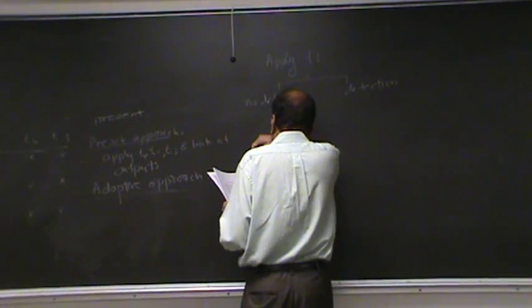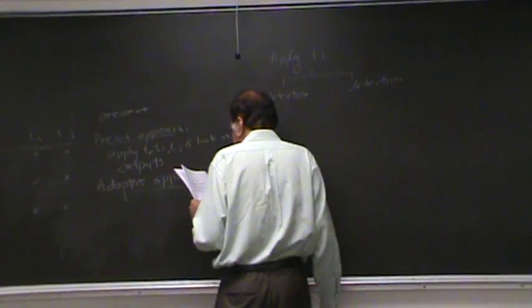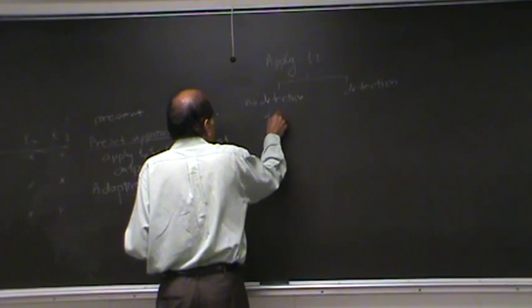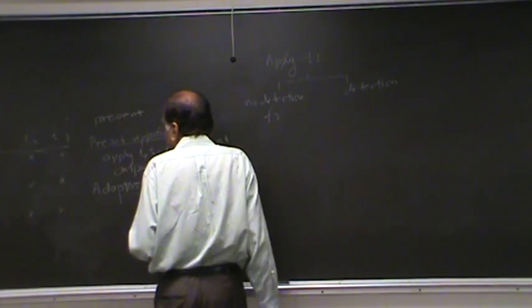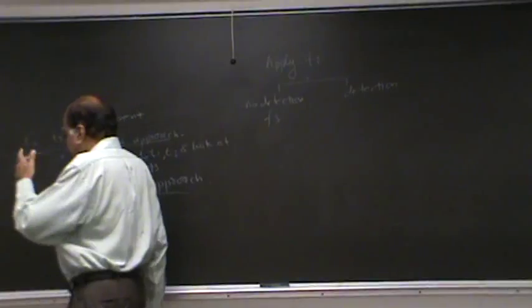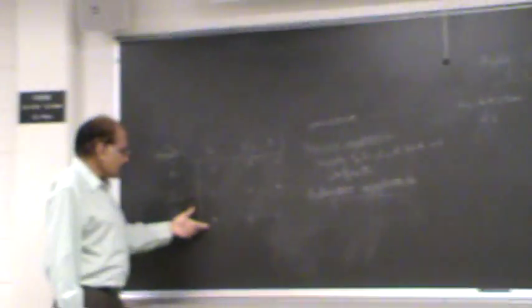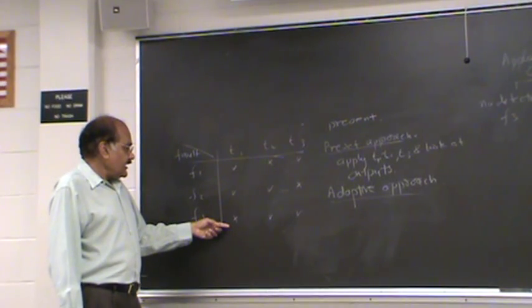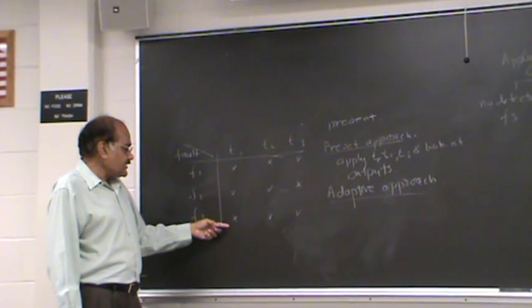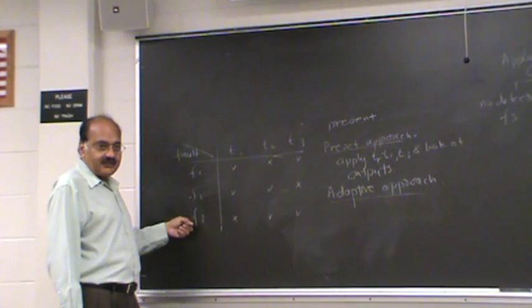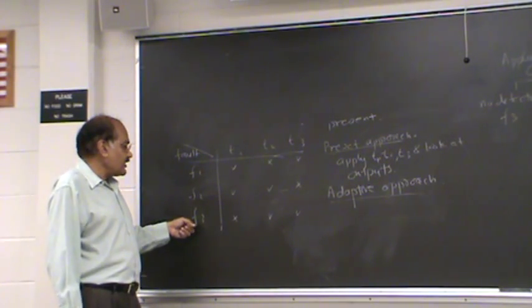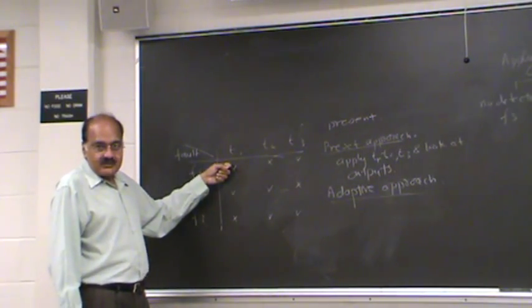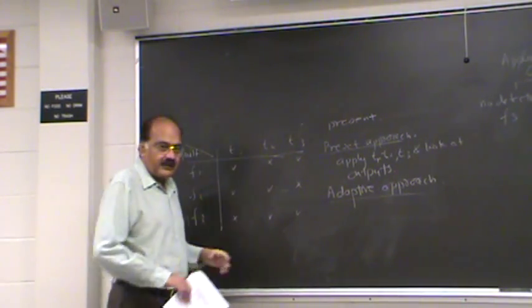Now, if a fault is not detected, you apply T1. If you apply T1, you know that there is a fault. And you did not detect a fault when you applied T1. Obviously, fault has to be F3. Because it's the only fault that will not be detected by T1. So, you can stop after applying one test.